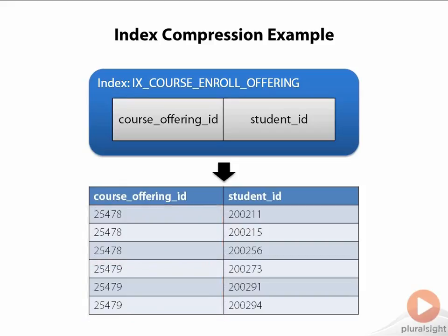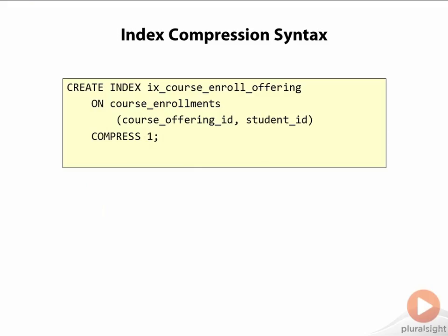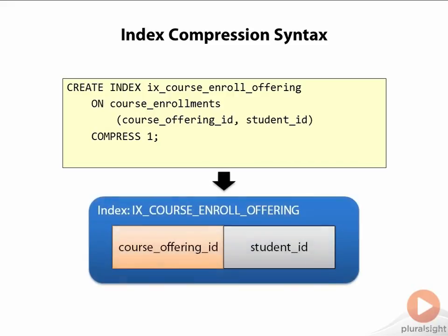So what we can do in these cases is use index compression in Oracle to not store this value over and over again in the index, but instead have all these entries point to a prefix value that represents this repeated value. To accomplish this, we include the COMPRESS keyword in the CREATE INDEX statement, with a value indicating the number of columns from the beginning of the index to be compressed. In this case, we just want to compress the first column, because that is the part of the index key that is repeated over and over, so we specify a value of one. It is the course_offering_id column that Oracle will replace with the prefix value in the index key in order to compress this index.